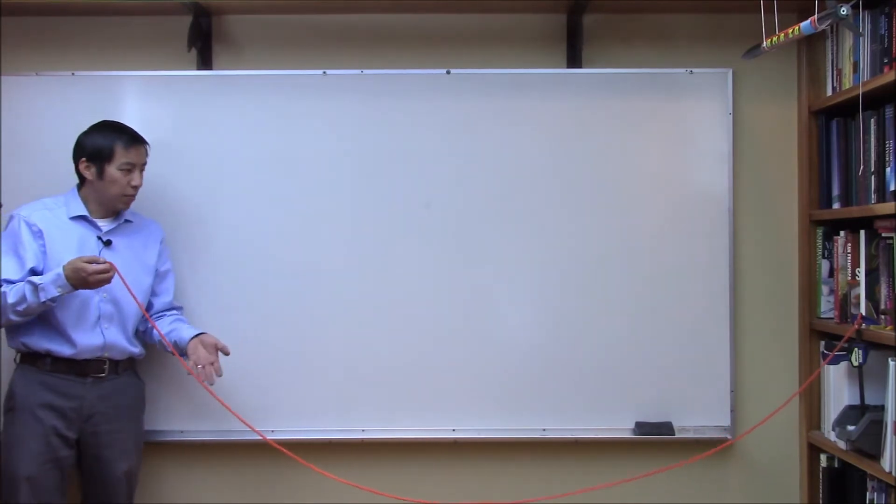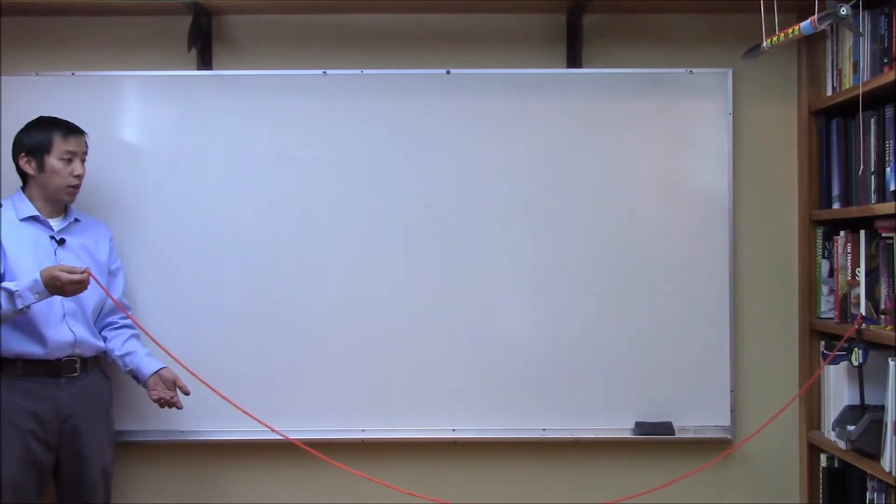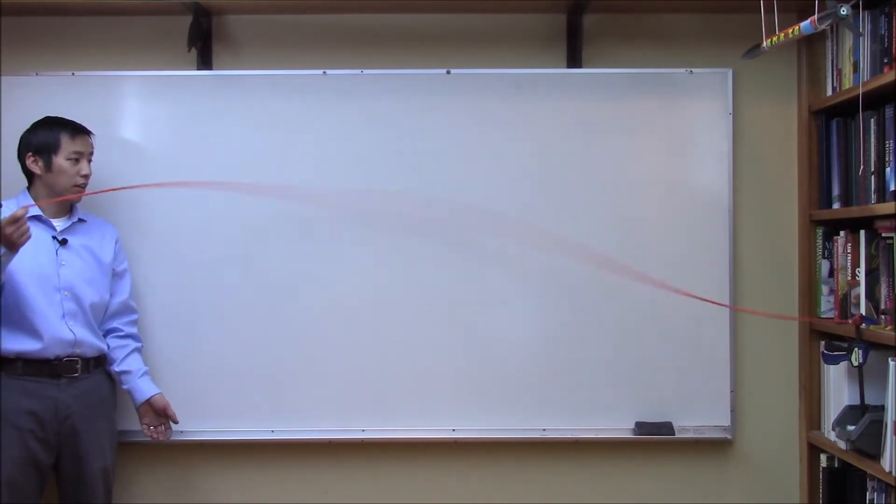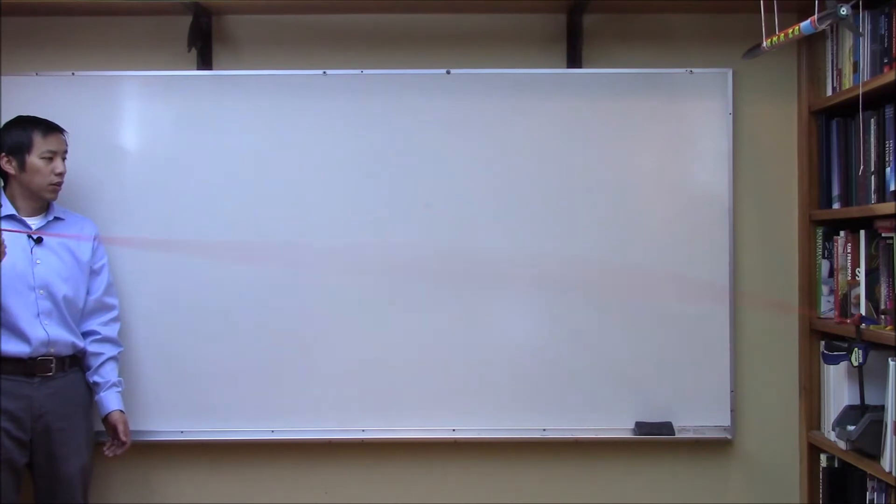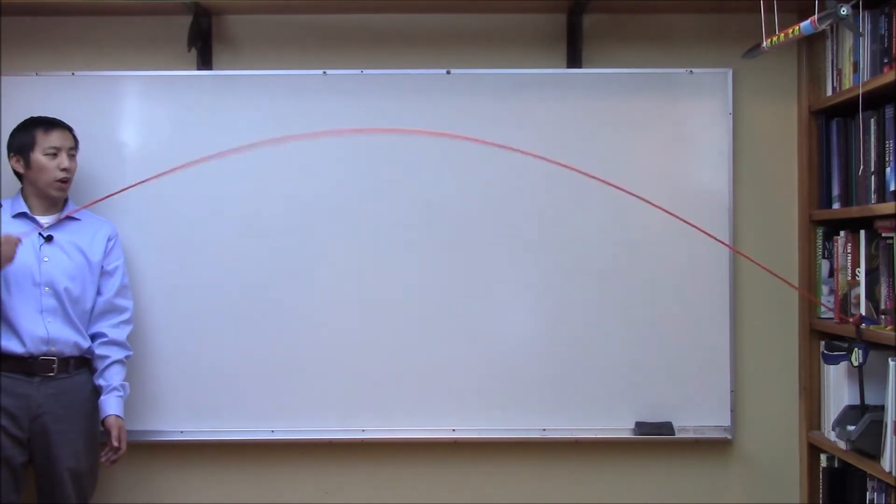For example, if I take this rope and start spinning it at a slow rate. Here we go. Okay, so we end up with this one wave here.